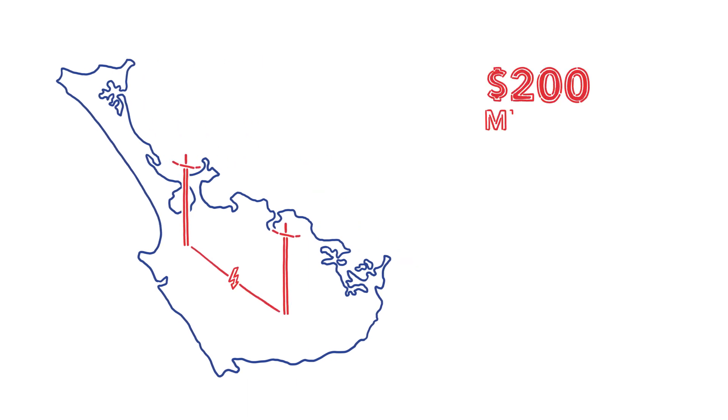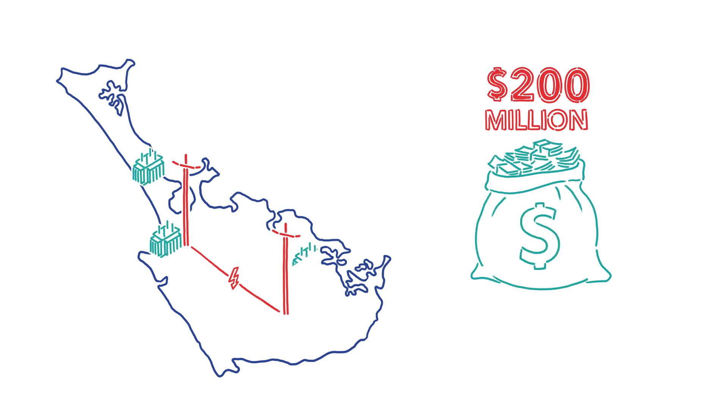So far, Top Energy has spent around $200 million on the network. We've built new substations, refurbished existing substations, improved the lines and added some small diesel generators around parts of our network like Kaitaia and Taipa to cover planned and unplanned power outages.